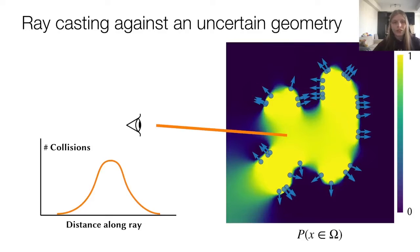Another query that we can answer using this quantity is where does a ray intersect against the surface. Given that there's many possible surfaces, the ray collision distances will follow a statistical distribution, which we can compute.